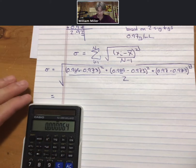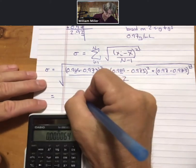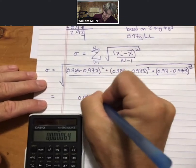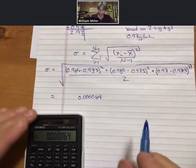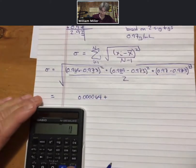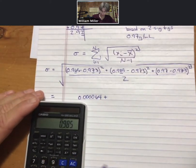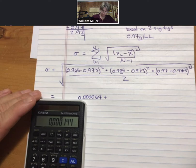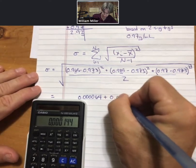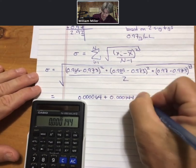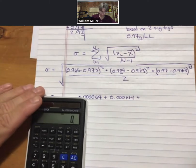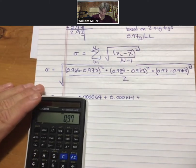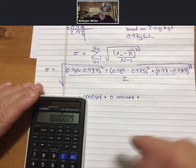All right, so I get that, then I have my squared button here. I'm just going to square it: 0.0000064. And even though it was negative, when you square it it will become positive. 0.985 minus 0.973 equals, important, equals, and then square it. 0.97 minus 0.973 equals, square it.